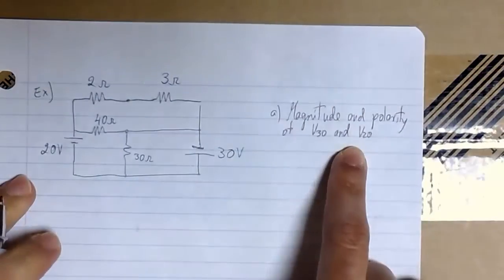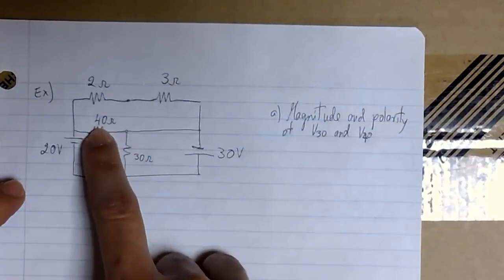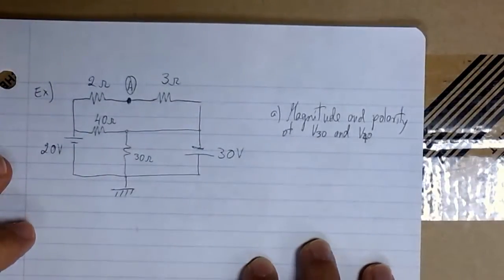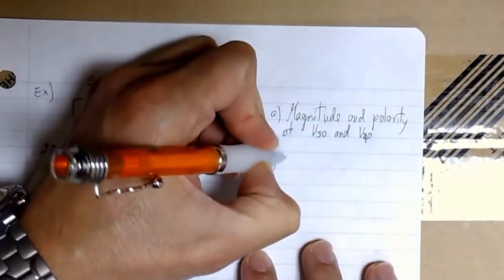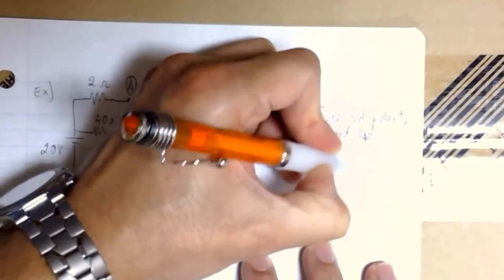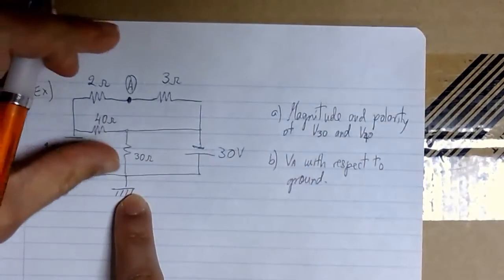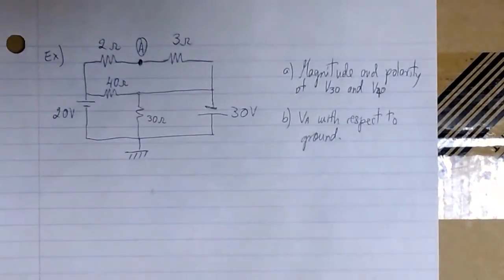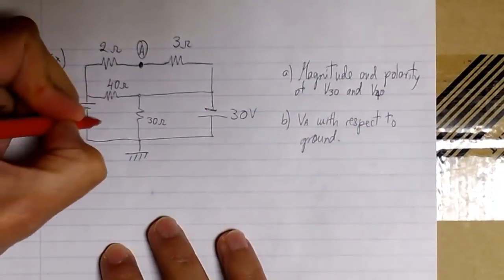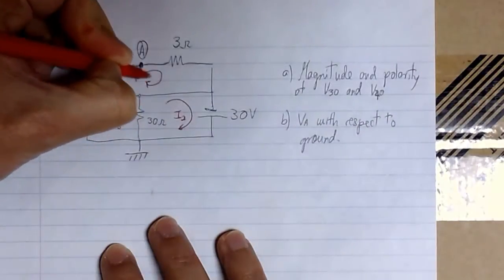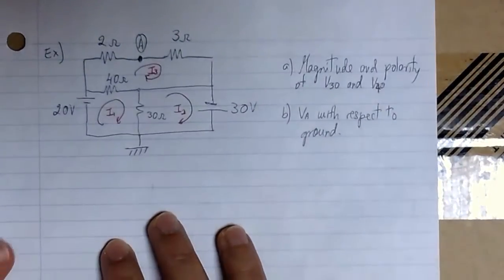In this second example we are going to use loop equations again. Now we have three loops, and we want to find the magnitude and polarity of V30 and V40. We have the 40 ohm resistor and the 30 ohm resistor. We're going to call this node A and draw our ground at that node over there. We also want to find the voltage at node A with respect to ground. So we define the loop currents: I1 for loop 1, I2 for loop 2, and I3 for loop 3, giving us three equations for three unknowns.